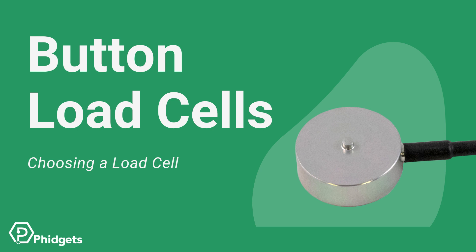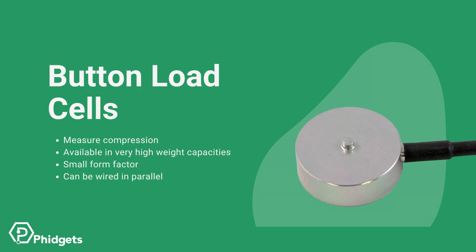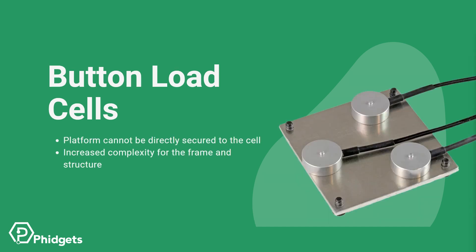Button load cells are designed to measure pure compression on a single point. They can support very high weight capacities considering their relatively small form factor, and they can also be wired in parallel. Unlike the other load cells discussed, the loading platform cannot be directly secured to button load cells — it needs to rest on the small button to minimize lateral forces. This increases system complexity and requires additional care when designing the mechanical frame and support structure.